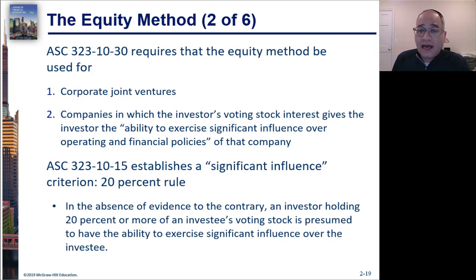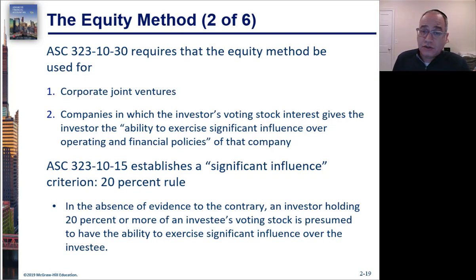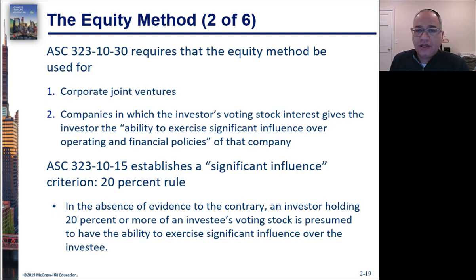This applies to any situation where you have significant influence, including corporate joint ventures where you don't have control. In a joint venture, one company may have control and must consolidate, while the other company has significant influence. The exact definition under ASC 323-1030 is that you have the ability to exercise significant influence over the operating and financial policies of that company.